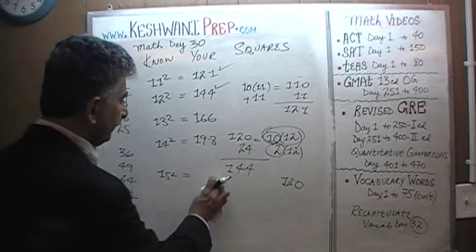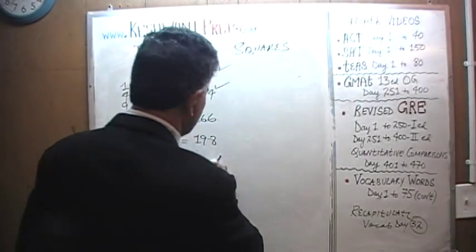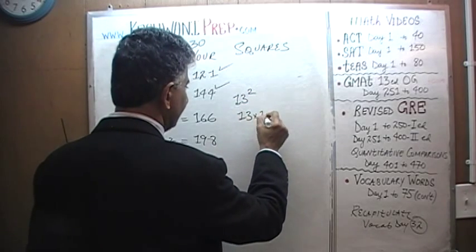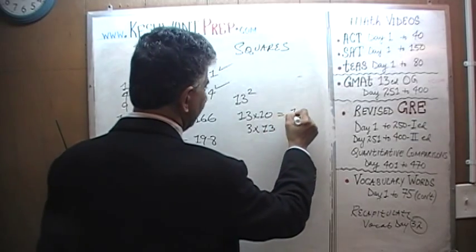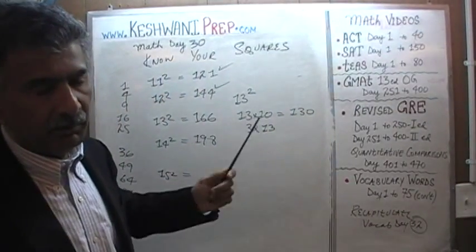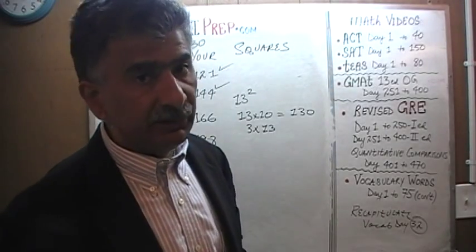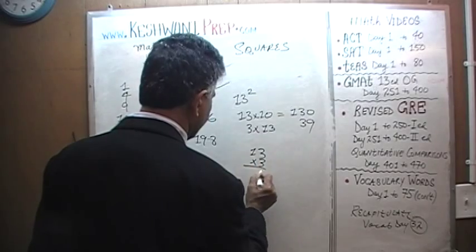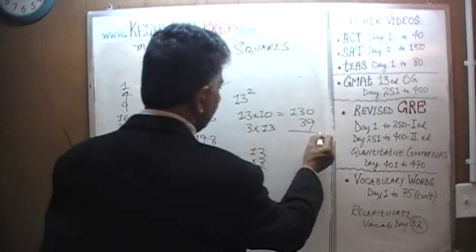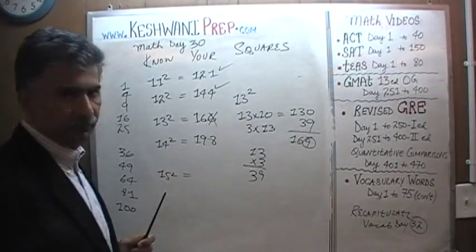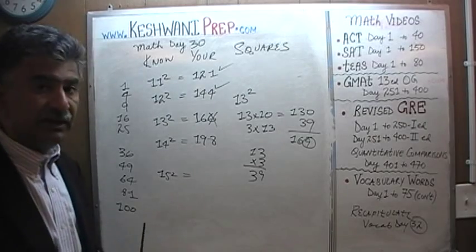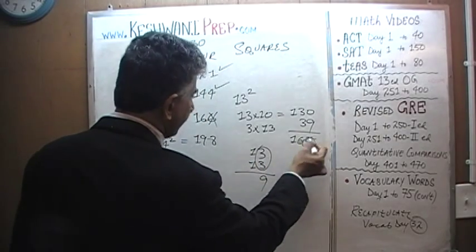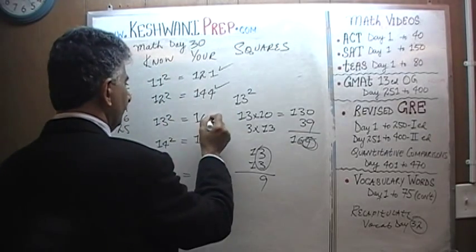How about 13 squared? Same exact trick. 13 squared has to be 10 thirteens and 3 thirteens. 10 thirteens are 130, and 3 thirteens are 39. Add up 39 and 130 — that should be 169, not 166. The unit digit has to be 3 times 3, which is 9, not 6. It is 169.